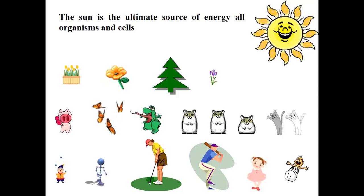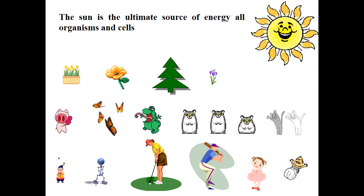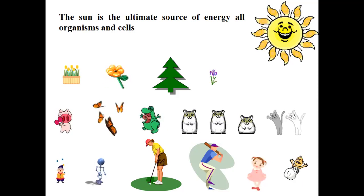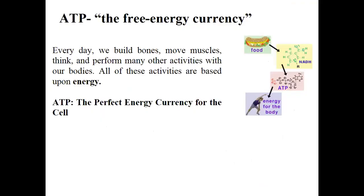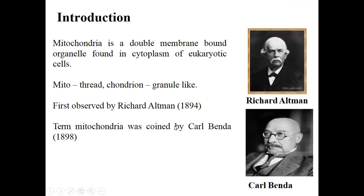I hope you guys remember these concepts well from your previous classes — the Krebs cycle, glycolysis, ATP production, and electron transport. These are all connected. ATP, the free energy currency, is taken from food, converted via NADH to ATP, and then used for other activities in life.